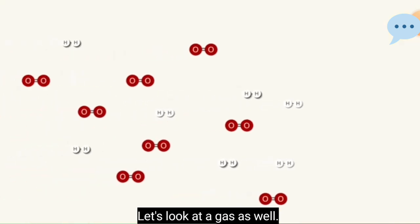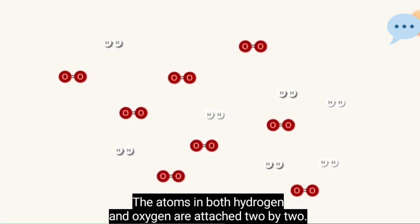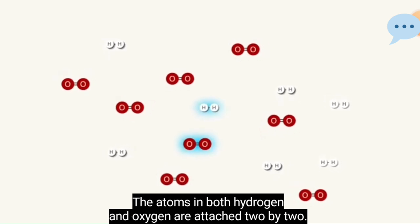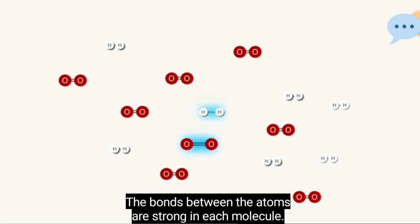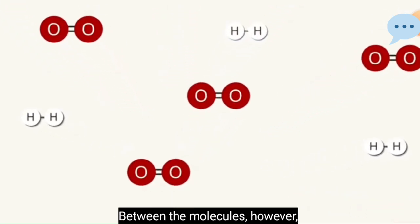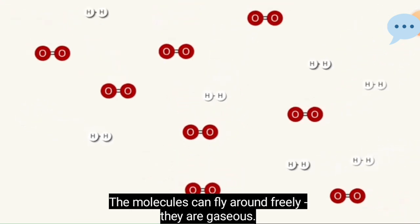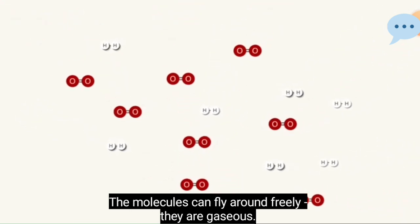Let's look at a gas as well. This is a mixture of hydrogen and oxygen. The atoms in both hydrogen and oxygen are attached two by two. The bonds between the atoms are strong in each molecule. Between the molecules, however, the bonds are really weak, almost non-existent. The molecules can fly around freely. They are gaseous.